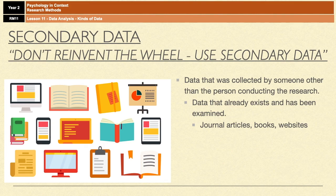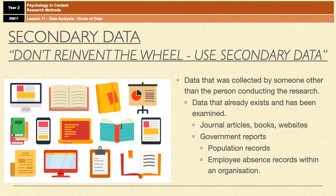Examples are things like journal articles, books and websites, government reports such as population reports, or employee absence records within an organization. All of those class as secondary data because it's information that's been collected by somebody else and that already exists, but could potentially be used for your own research depending on what the research is.